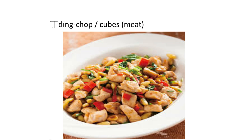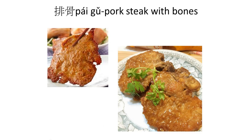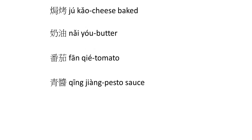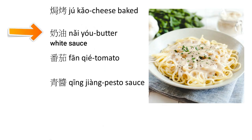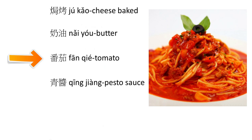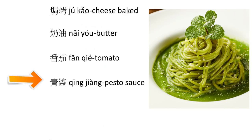If you see a character meaning cubes of meat, it refers to chopped meat cubes — very common in Taiwan. There are also some pasta-related words: 焗 means cheese-baked, so if you like cheese you can order that. 奶油 is butter, 番茄 is tomato, and 青醬 means pesto or pasta sauce.